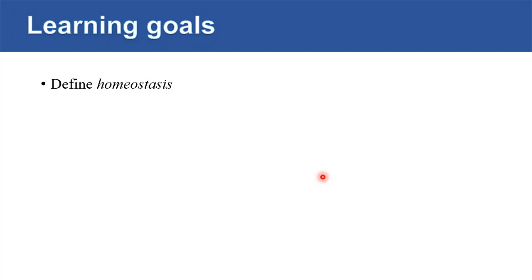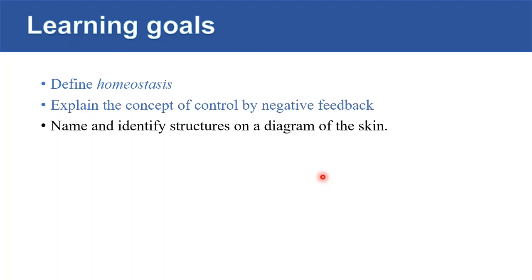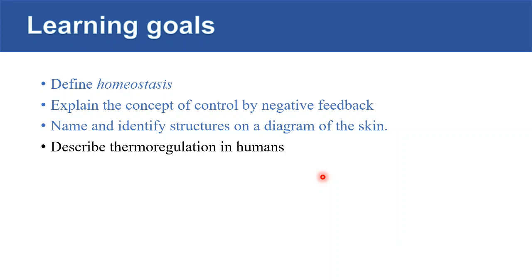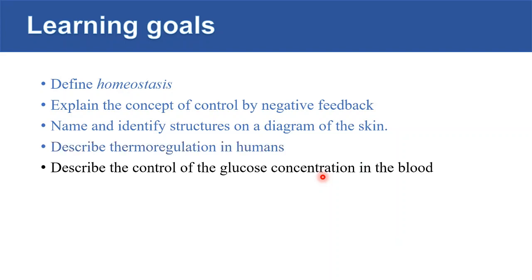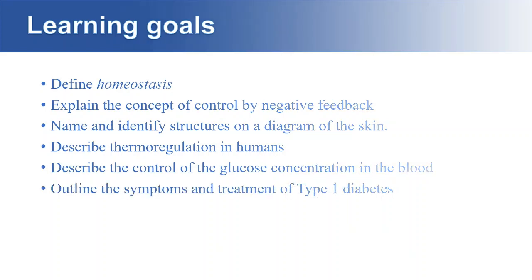The learning goals are: define homeostasis, explain the concept of control by negative feedback, name and identify structures on the diagram of the skin, describe thermoregulation in humans, describe the control of glucose concentration in the blood, and outline the symptoms and treatments of type 1 diabetes.